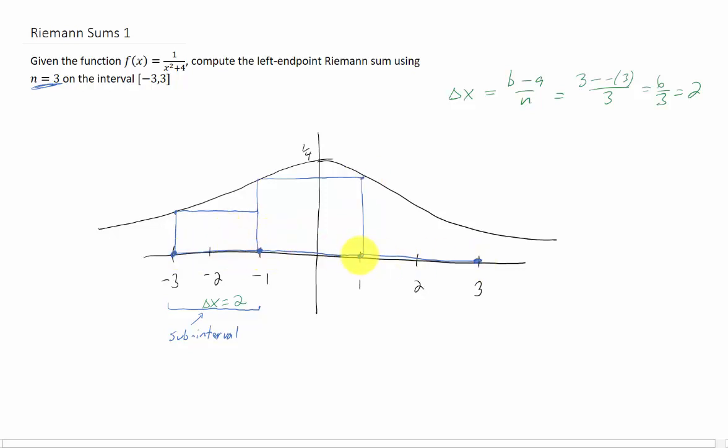Now our last subinterval, we go to the left point. We ask what is the y value and use that y value to draw a rectangle. Now our Riemann sum is the sum of these three areas. What is the area of this first rectangle? Well, its width is 2.